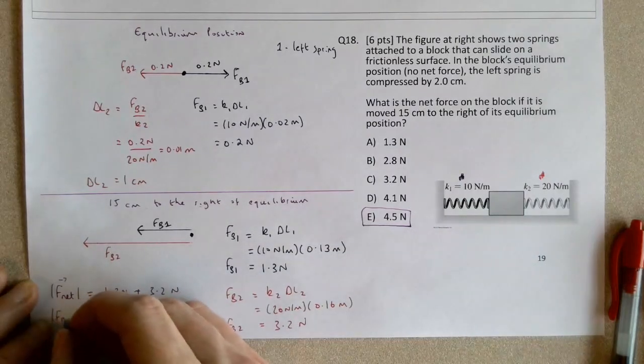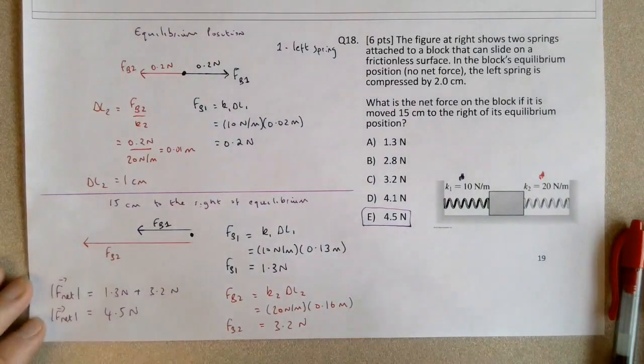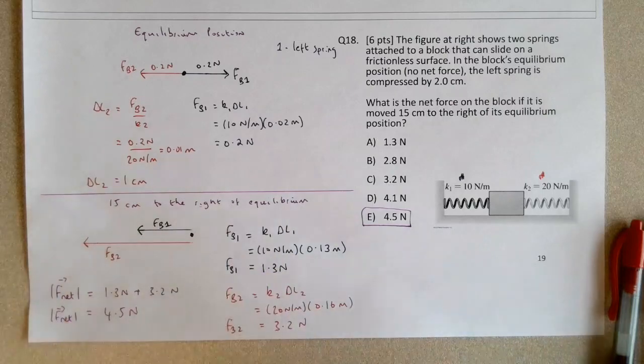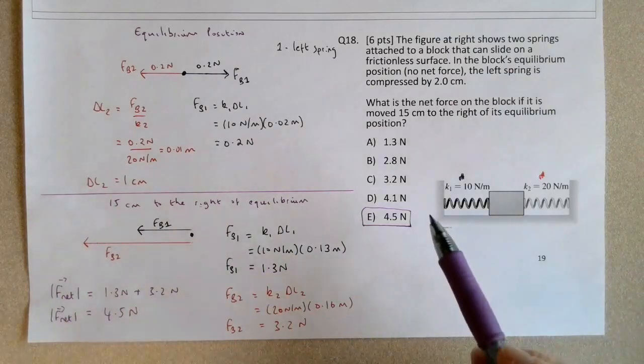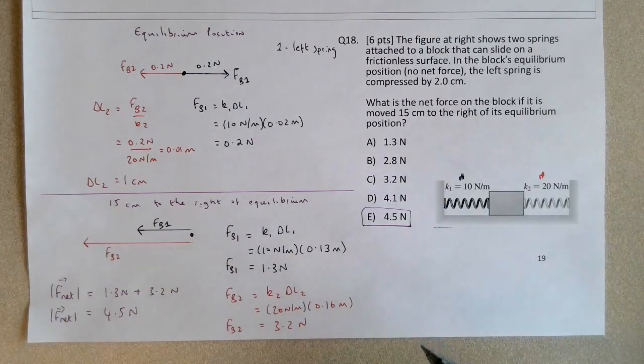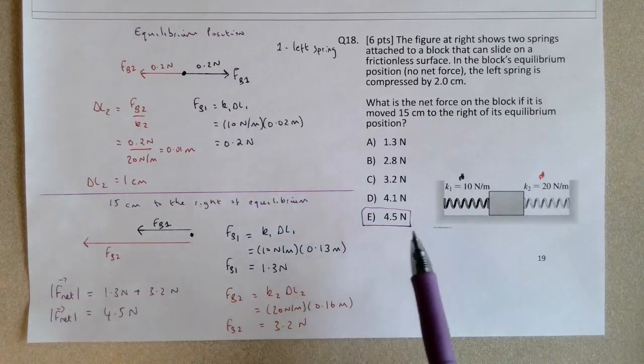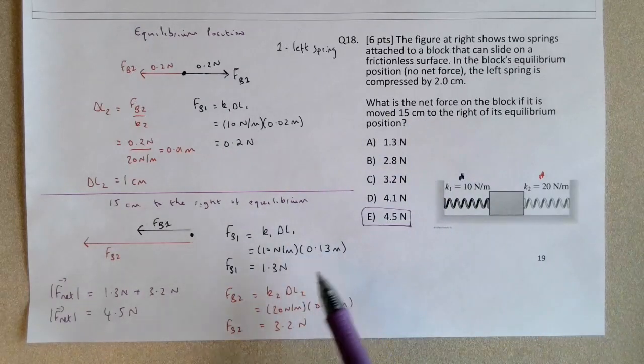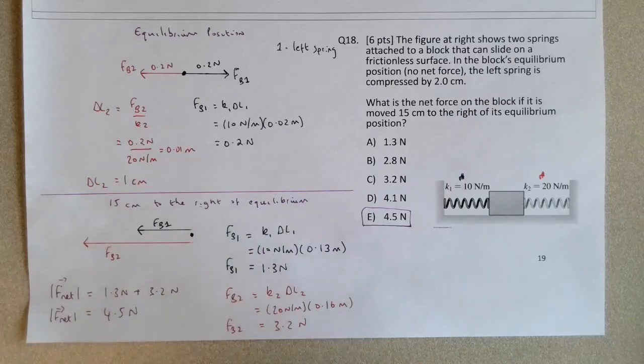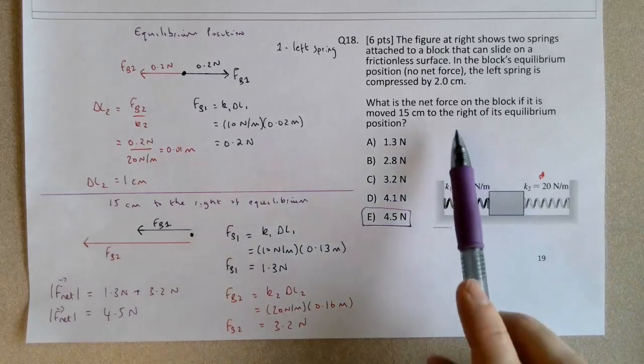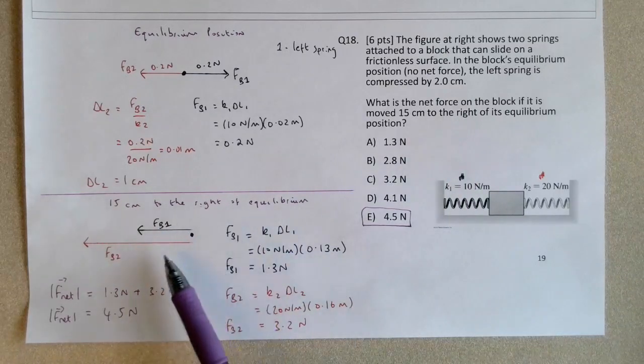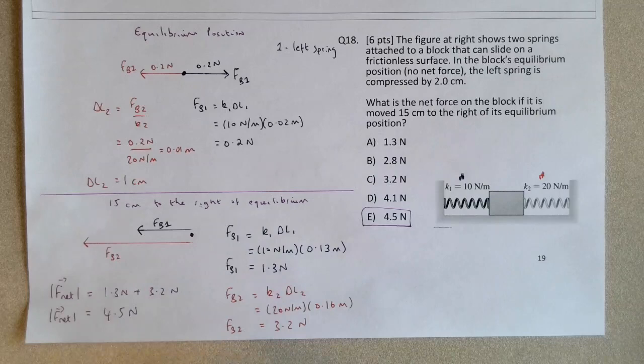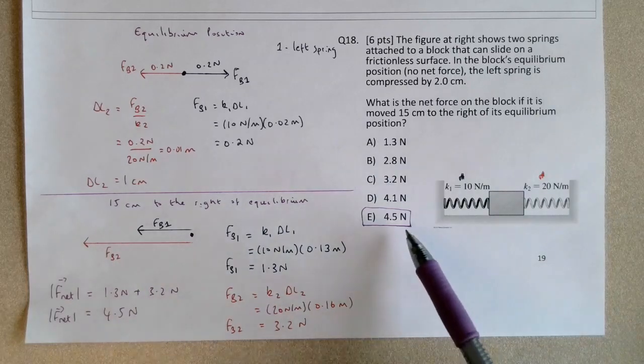So pretty challenging question. That's considering the equilibrium position, information given in the question, and then carefully thinking about what this 15 centimeters to the right means for each individual spring, and also some vectors in here as well, to consider that in this 15 centimeters to the right, spring 1 is pulling to the left, and spring 2 is pushing to the left. So we can sum these two to give you the correct force.